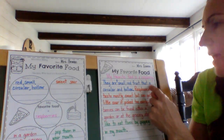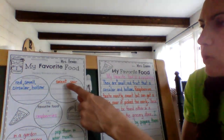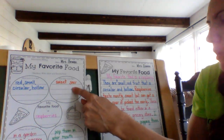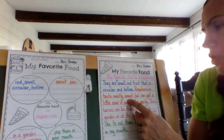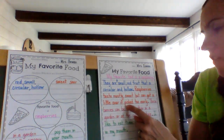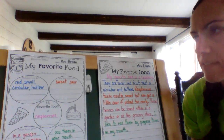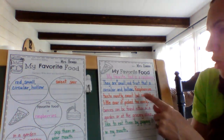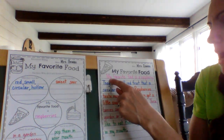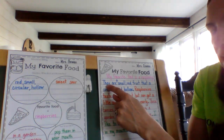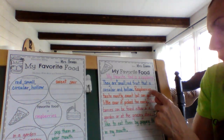For what does it taste like, I said sweet and sour, so I made those into a complete sentence: raspberries taste mostly sweet but can get a little sour if picked too early. I did add a little more detail to that sentence. Also notice I'm not starting my sentences with the same word — the first sentence started with 'my,' the second with 'they,' and the third with 'raspberries.'